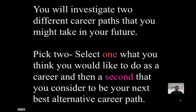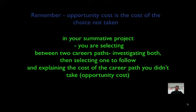For this summative assessment, you will investigate two different career paths that you might take in your future. Pick two. Select one — what you think you would like to do as a career — and then a second that you consider to be your next best alternative career path. Remember, Opportunity Cost is the cost of the choice not taken. In your summative project, you are selecting between two career paths, investigating both, then selecting one to follow, and explaining the cost of the career path that you didn't take.